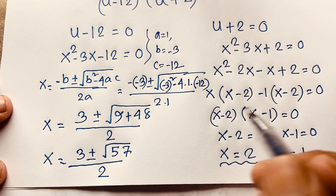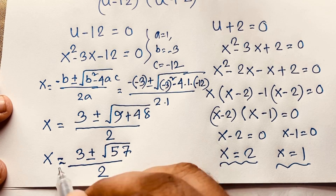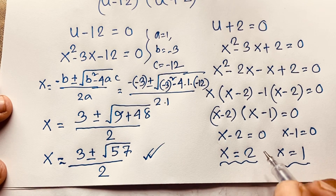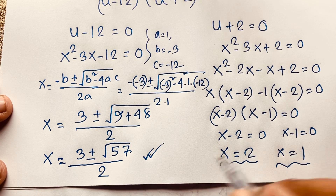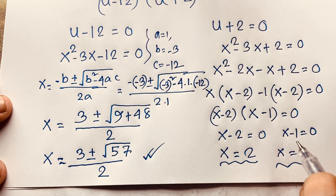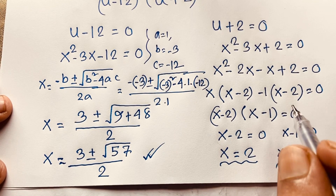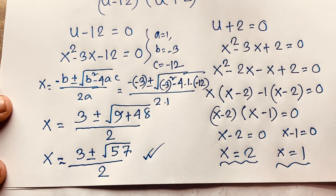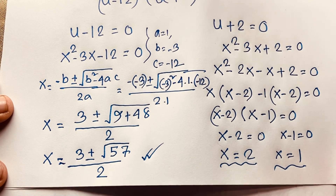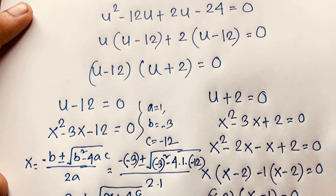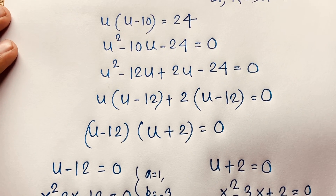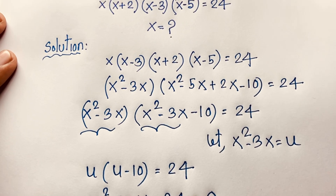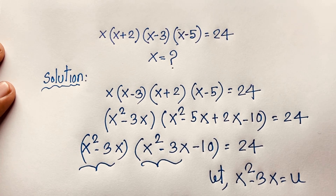So our final answers for this tricky math olympiad question are x equals 2, x equals 1, and also x equals (3 ± √57) / 2. It is an interesting math. Thank you all — if you enjoyed this, please subscribe to our channel for other interesting videos. Goodbye, take care.